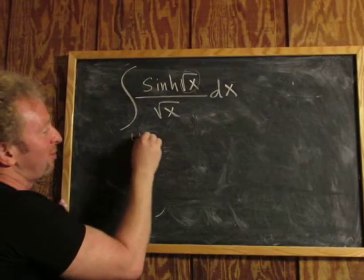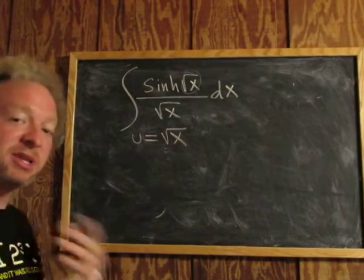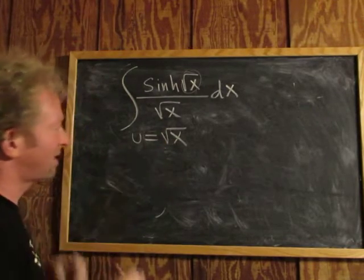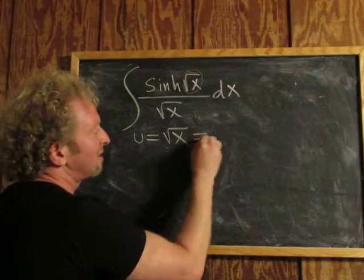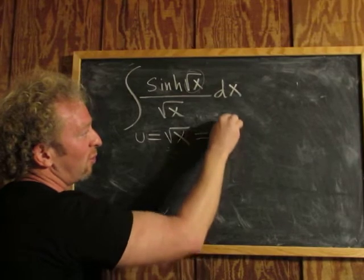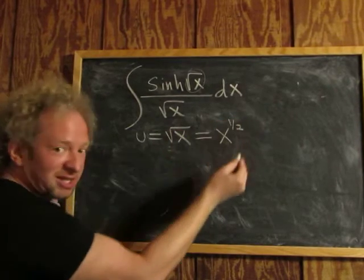If we let u equal the square root of x, we have to compute du. First we have to rewrite this in a nice way. We can write this as x to the one-half.